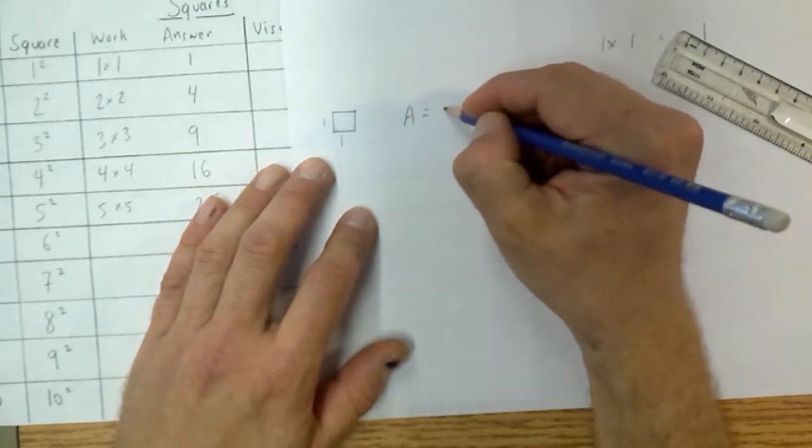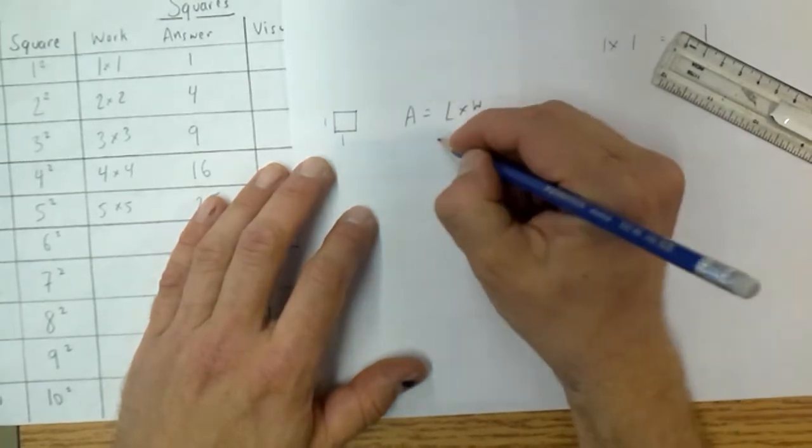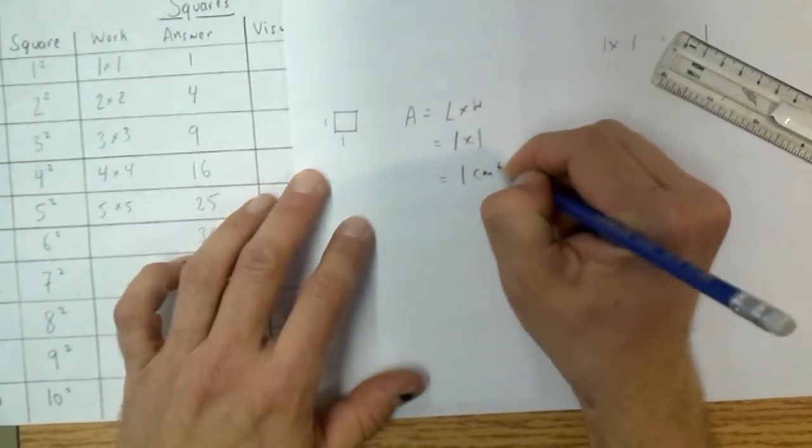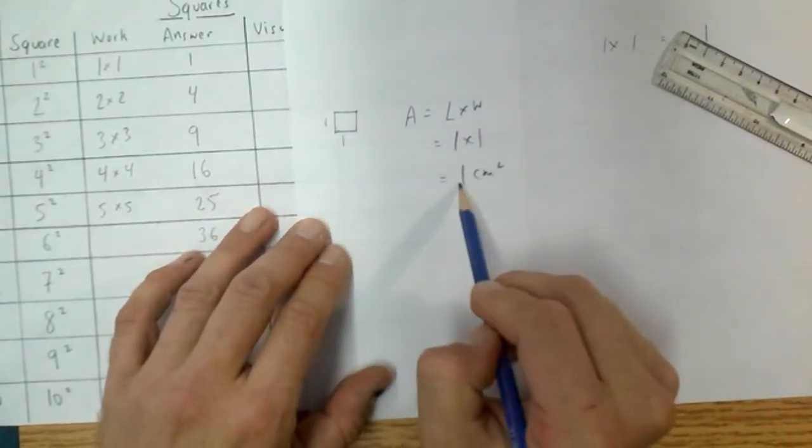We would say well what's the area of this square? Area equals, in this case it's going to be length times width. But in this case our length and width they're both 1 and our area would be 1 cm squared. So a square which has side length 1 and 1, the answer will be 1.